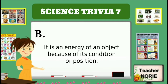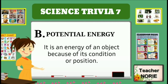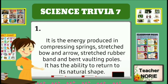It is an energy of an object because of its condition or position. It is a form of energy produced in compressed springs, stretch bow and arrow, stretch rubber band and bent rotating poles. It has the ability to return to its natural shape.